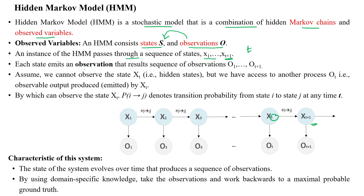Each state is emitting an observation that results in a sequence of observations o1, o2, etc., o_{t+1}. That means x1 generates o1 and x_{t+1} generates o_{t+1}. Likewise, x_{t+2} will generate o_{t+2}. We assume that we cannot observe the hidden state x_t because the state is unknown to the user, since it is a hidden state.